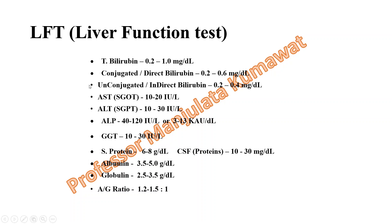For the liver function test (LFT), total bilirubin should be 0.2 to 1 mg per dL. Conjugated (direct) bilirubin is 0.2 to 0.6 mg per dL, and indirect bilirubin is 0.2 to 0.4 mg per dL. AST (SGOT, aspartate transaminase) is 10 to 20 international units per liter. ALP (alkaline phosphatase) is 40 to 120 international units per liter, or 3 to 13 KAU (King-Armstrong units) per dL.